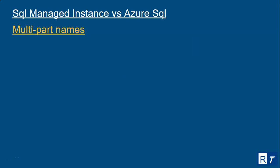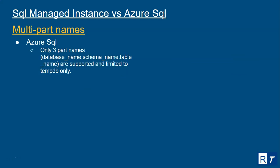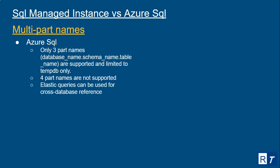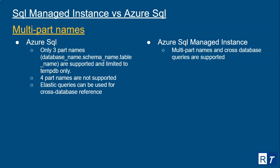For multi-part names: Azure SQL Database only supports three-part names — database name, schema name, and table name — and these are limited to TempDB only. Four-part names are not supported, meaning you cannot reference cross-database or cross-server tables. Elastic queries can be used for cross-database reference. For Azure SQL Managed Instance, multi-part names and cross-database queries are fully supported.